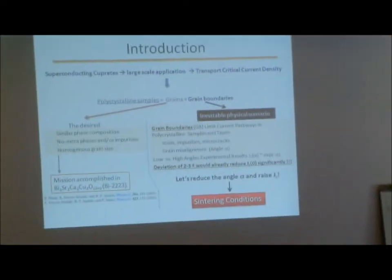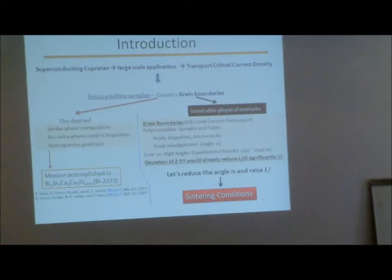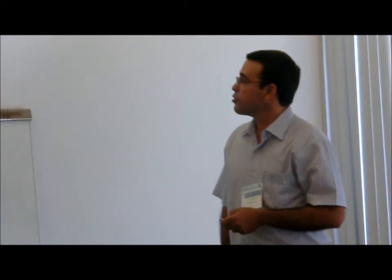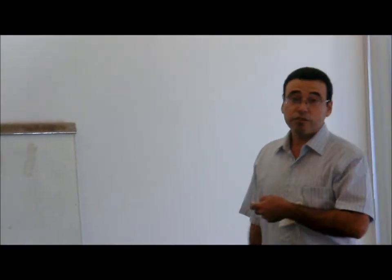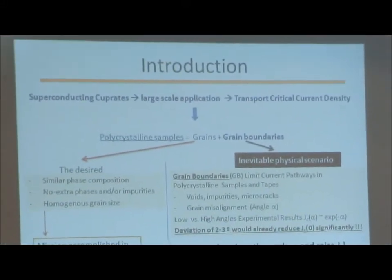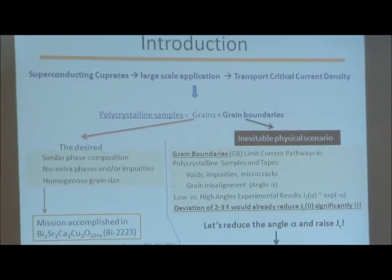When we see large scale applications of superconductors or grain superconductors, the most important magnitude is the transport critical current density. The idea here is to increase this model as much as possible. In the case of polycrystalline superconductor, we can identify two important units that can increase the model of this critical current density.